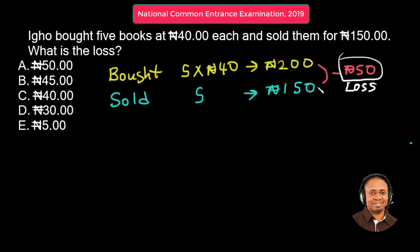50 Naira is the loss, because he bought for 200 and he sold for 150, so he is 50 Naira short. The answer, option A, is the right answer. Thank you for watching, and see you in the next video.